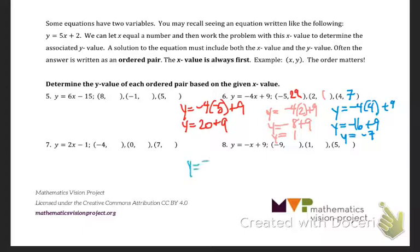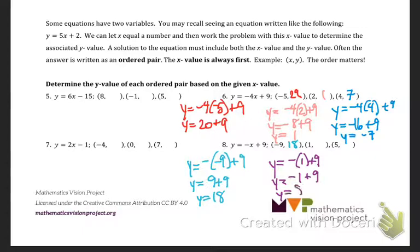Same process. y equals negative negative 9 plus 9. So negative times a negative will give me a positive. And 9 plus 9 gives me 18. Plugging a 1 in. So negative 1 plus 9 will give me a negative 1 plus 9, which will give me 8. And finally, y equals 5. So plug that in negative 5 plus 9. Y equals negative 5 plus 9. Negative 5 plus 9 should give me a positive 4. So your coordinates there would be 5 comma 4.